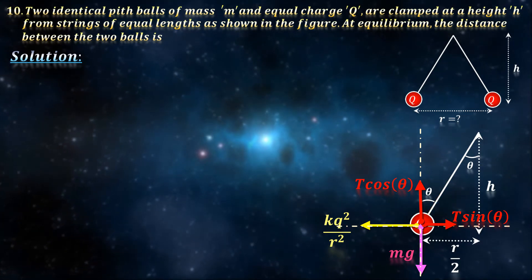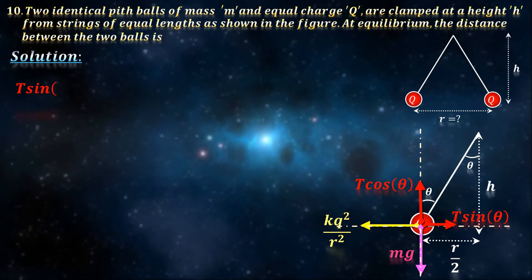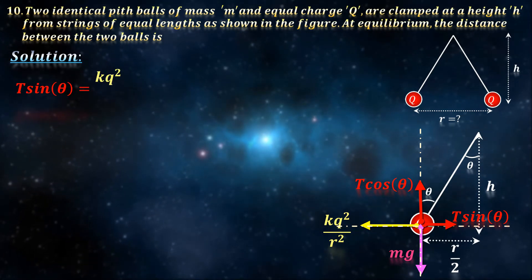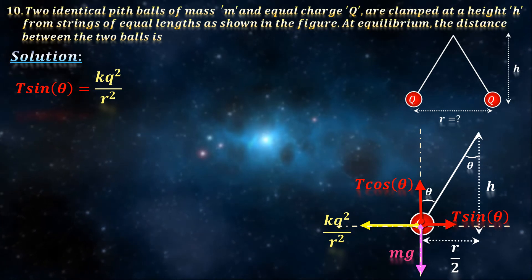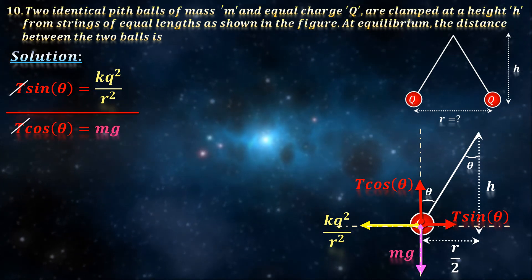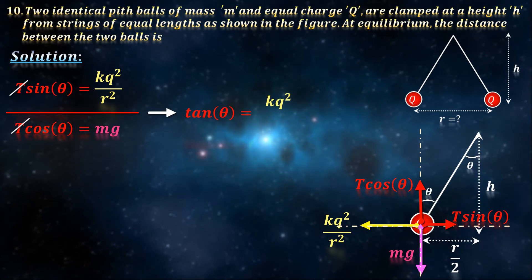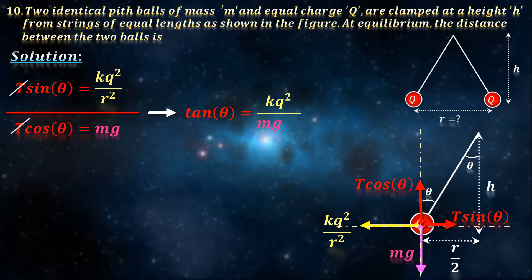Theta is not mentioned, but no worries, we know trigonometry. So, T sin theta equals kq squared by r squared. T cos theta equals mg. Divide the two, giving tan theta equals kq squared by mg r squared.